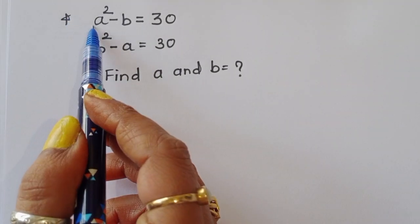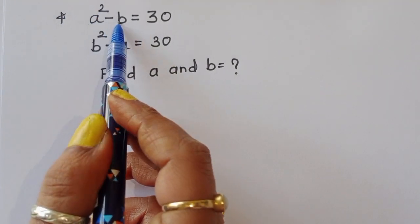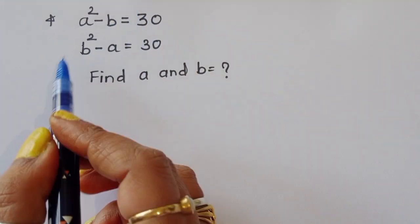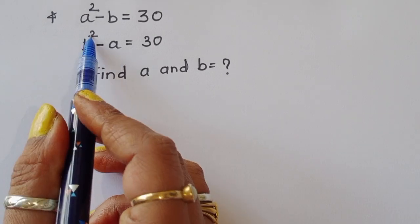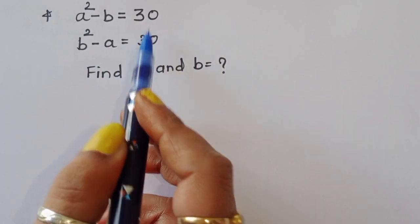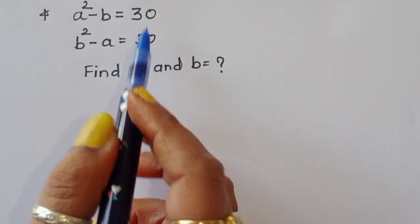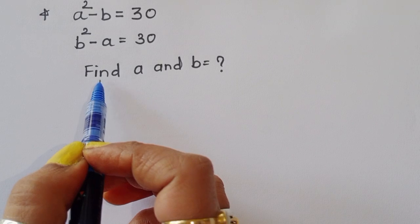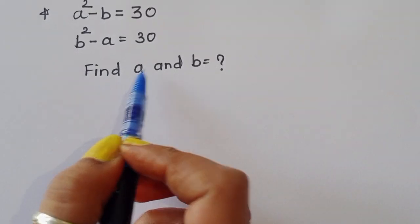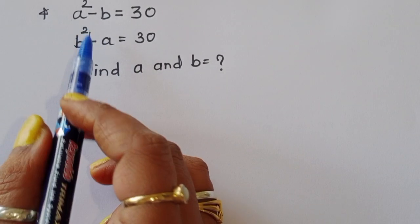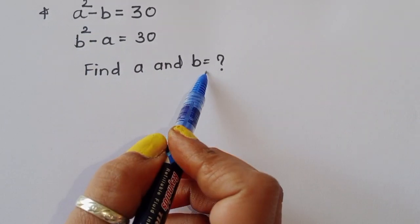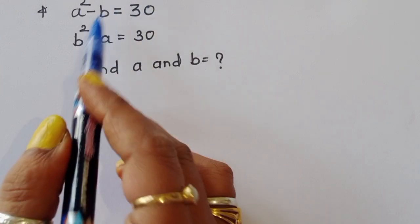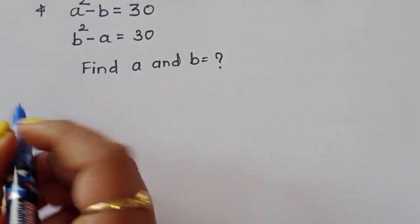The question is: given a squared minus b is equal to 30, and b squared minus a is equal to 30. These are two equations given, and we have to find out the value of a and b. Let's look at the solution.